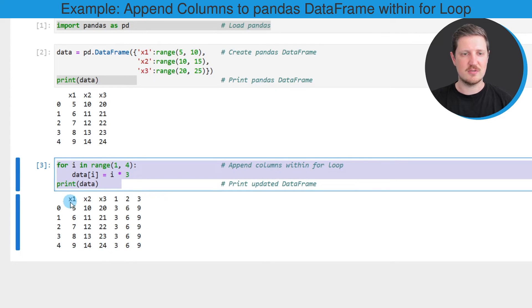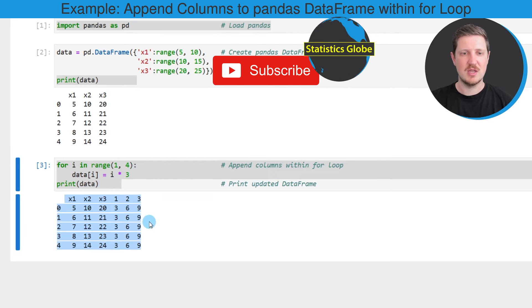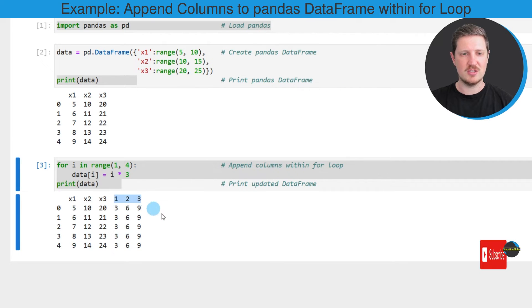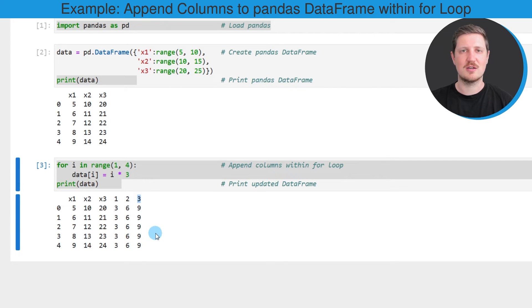After running these lines of code you can see that we have updated our DataFrame. Now our DataFrame contains three additional columns which are called one, two, and three. These values correspond to the index positions of our for loop, and we have added certain values within these columns.